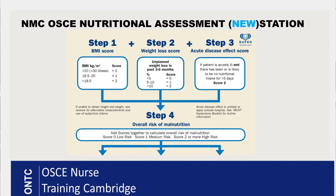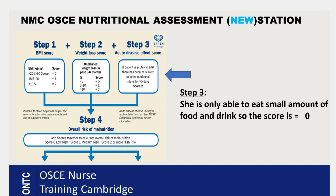Step three is straightforward — look at the scenario and see if she fits the acute disease effect category. The information tells us she's only able to eat small amounts of food and drink, but she is eating. Acute disease effect applies only if the patient cannot have any nutritional intake for six days or more. In this case she's still having some nutritional intake, so her score is zero.